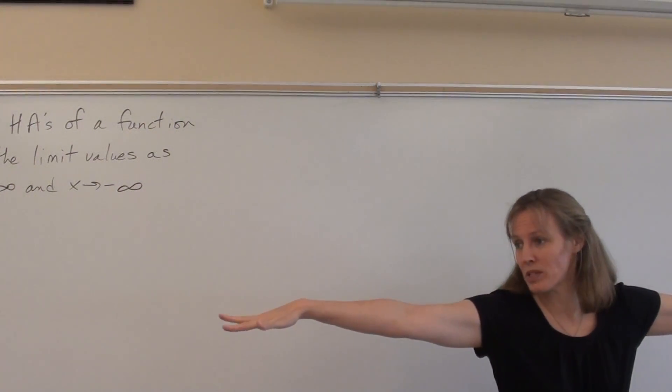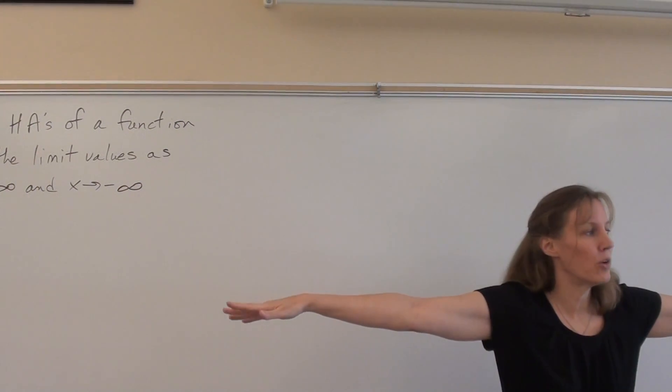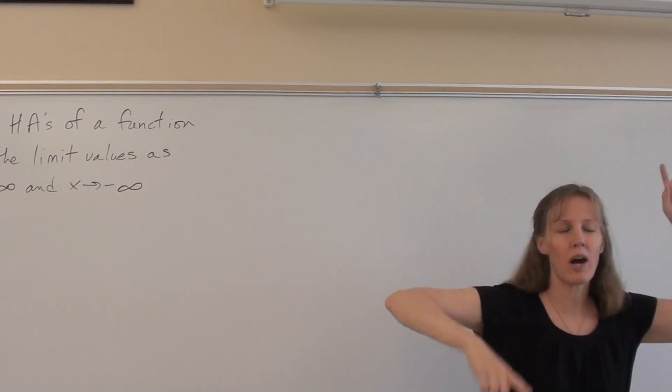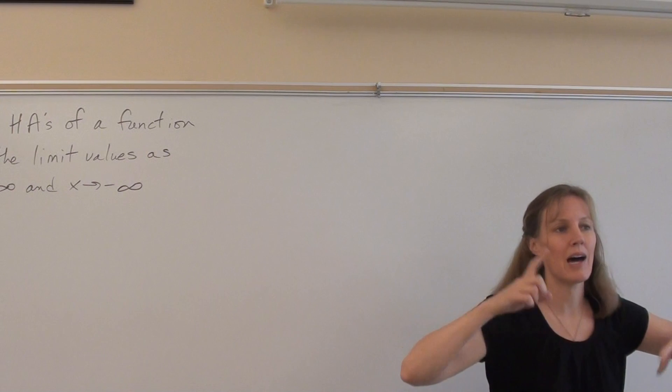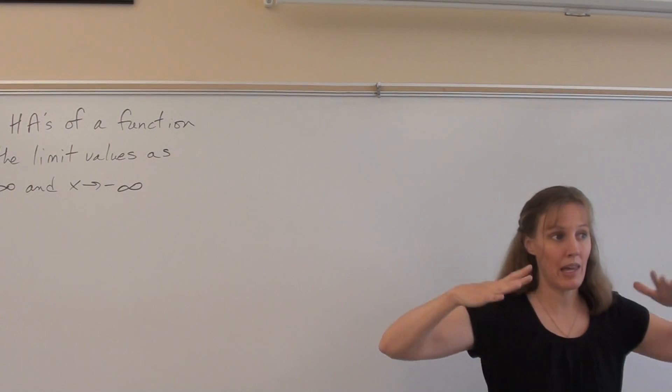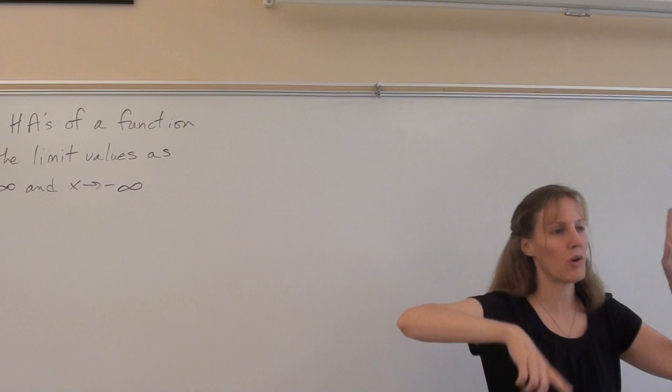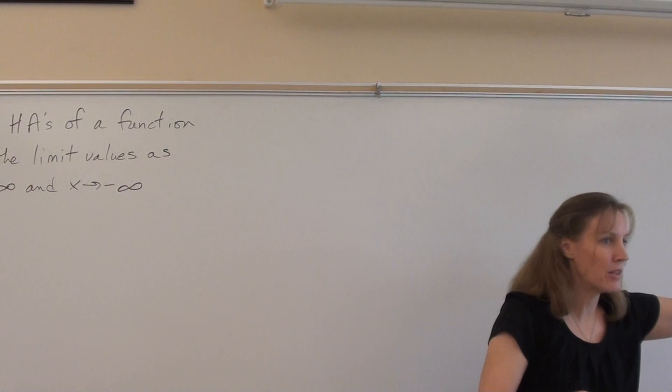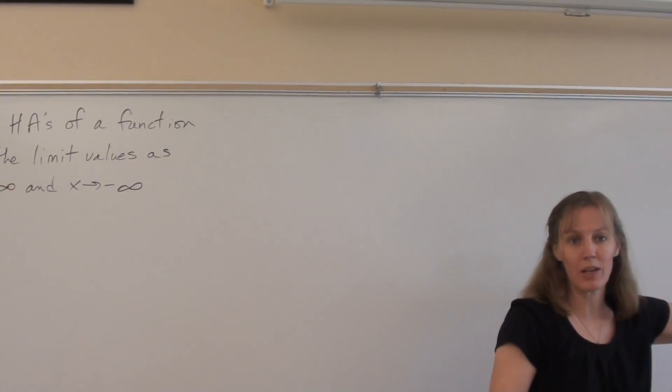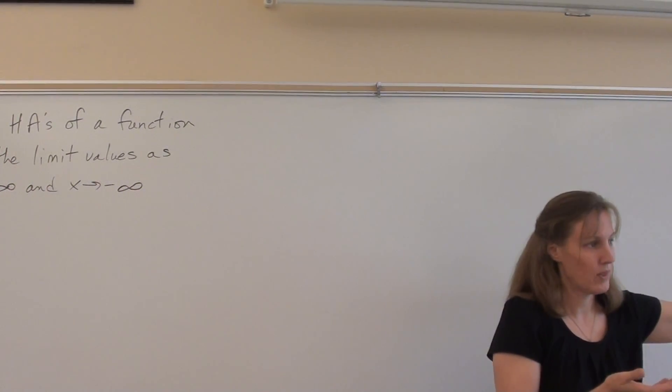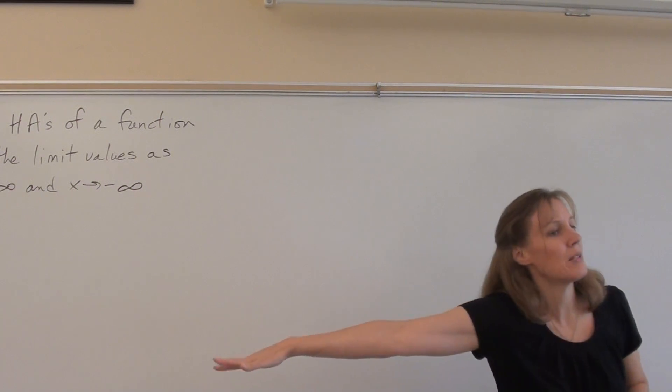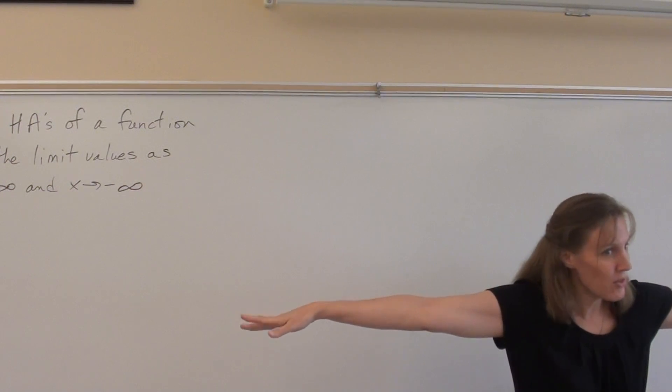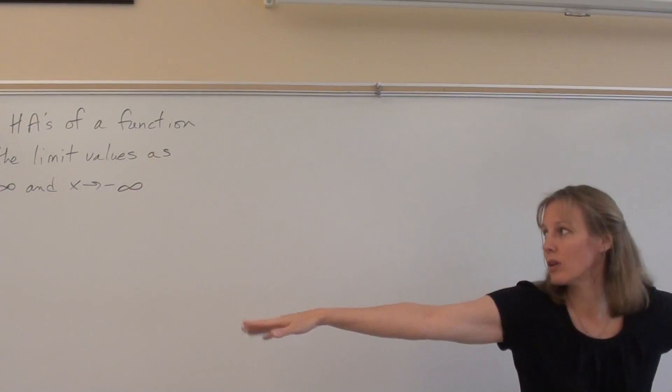or at this end one specific value, those are the horizontal asymptotes. It doesn't matter what happens in the middle. So a function can cross over a horizontal asymptote a thousand times. It's not like an electric fence where you can't cross it. The function can cross it a billion times. It's just a description of the end. What's happening out here? Does it flatten out to one y value?